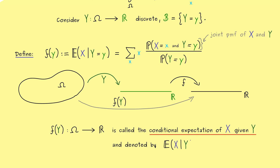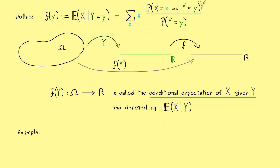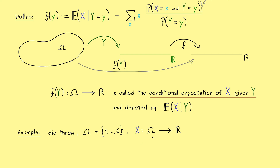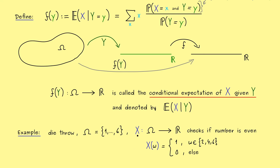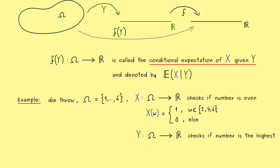To see that, let's immediately consider an example. We look at discrete examples, and throwing a die is always a good model. The random variable X checks if the number thrown is even, so X(omega) is either 1 or 0 — specifically 1 for outcomes 2, 4, and 6. On the other hand, the random variable Y checks if the result is 6 or not — that is, did we throw the highest number. Y also takes values 1 and 0, and we get 1 only when omega equals 6.